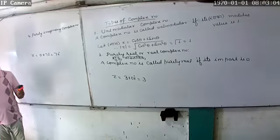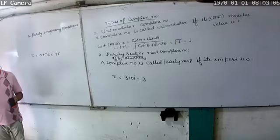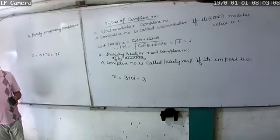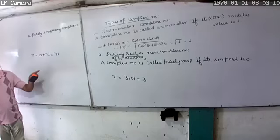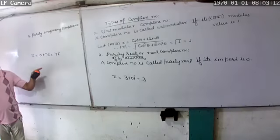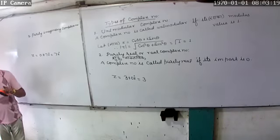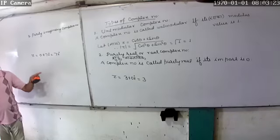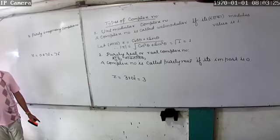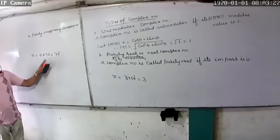But Paribastha is the definition. A purely real form has imaginary part zero. A purely imaginary form has real part zero. Do you understand?